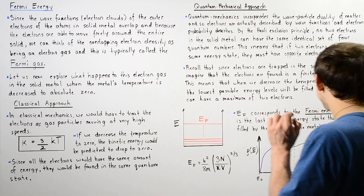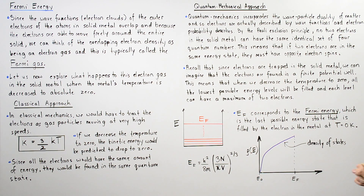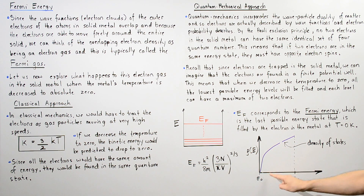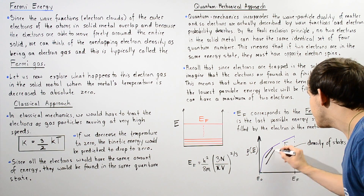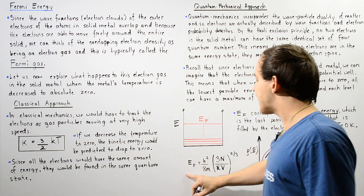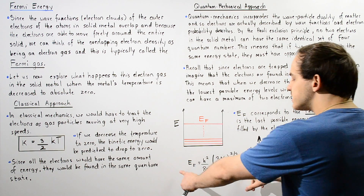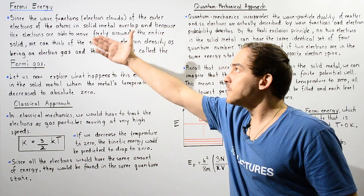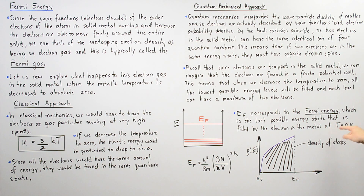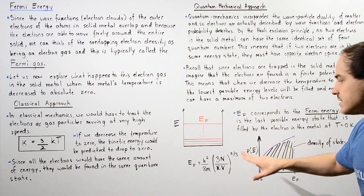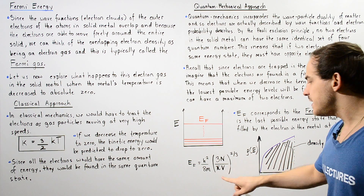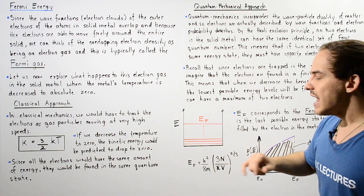We can use the density of states function as shown in the following diagram. If we integrate from energy zero to the Fermi energy, we get the entire shaded region. We can calculate what this shaded region is, and then use that value to calculate the Fermi energy. The Fermi energy equation gives us: n is the number of possible quantum states, V is the volume, m is the mass of the electron, and h is Planck's constant.